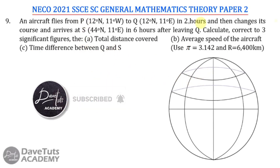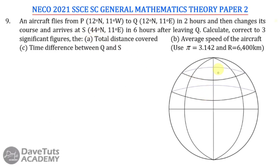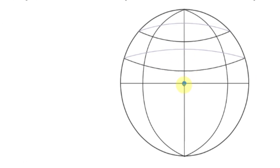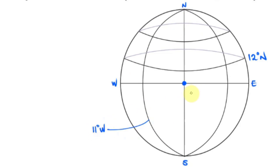Let's locate points P, Q, and S on our globe. Point P is on latitude 12° North — we start from the origin, the center of the globe, and measure outward. Taking 12° North and 11° West, the intersection of that longitude and latitude gives us point P.